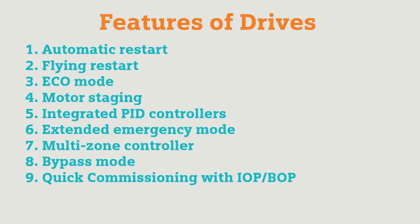Extended emergency mode can be activated in the event of fire. Multi-zone controller is also used in the closed-loop control system. Bypass mode: when there is a setpoint change or a fault, changeover to line operation can be done with this bypass mode. We can also make quick commissioning with the intelligence operating panel or basic operating panel — in short time we can commission this drive.